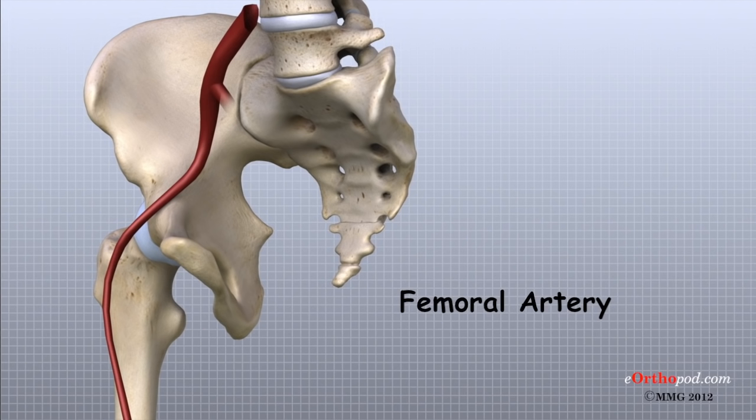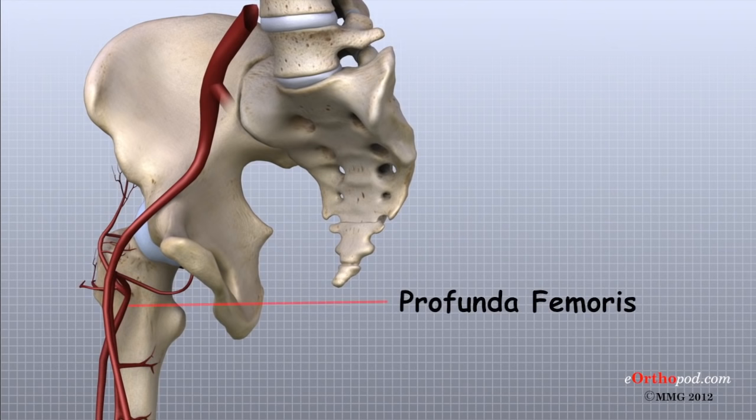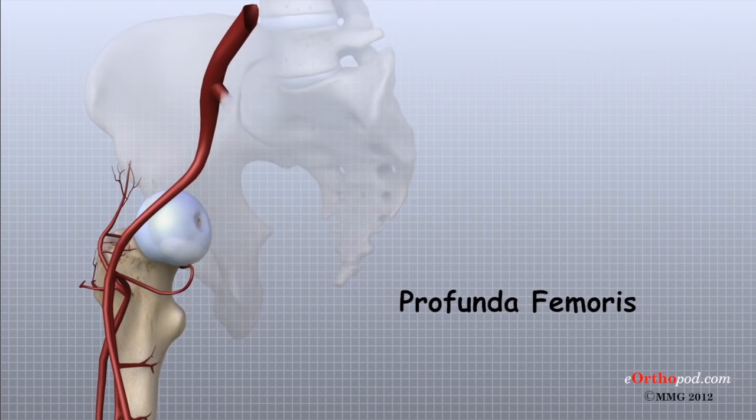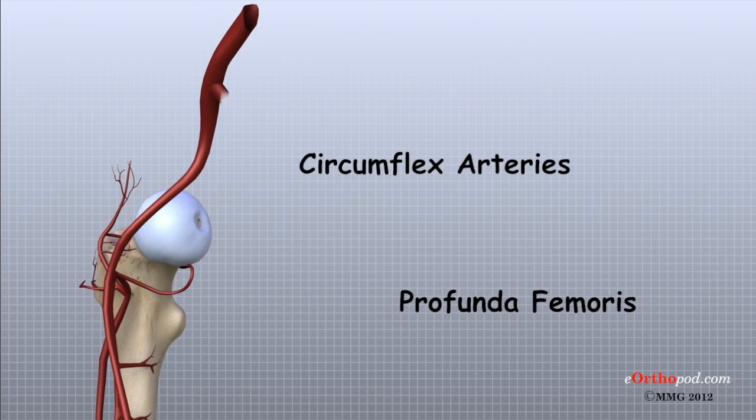The femoral artery has a deep branch called the profunda femoris. Profunda means deep. The profunda femoris sends two vessels that go through the hip joint capsule. These vessels are the main blood supply for the femoral head.